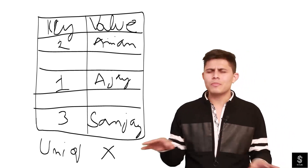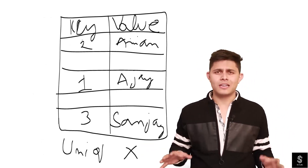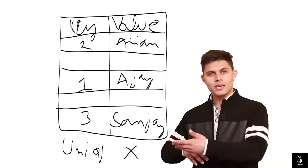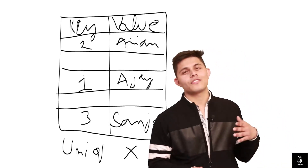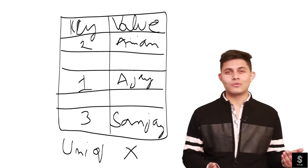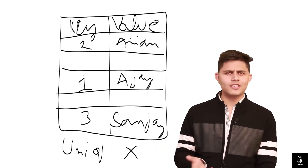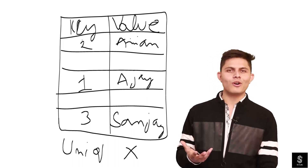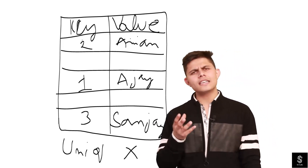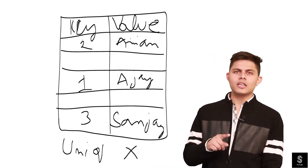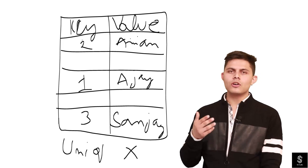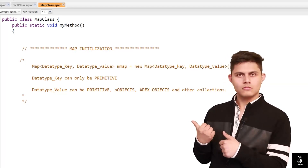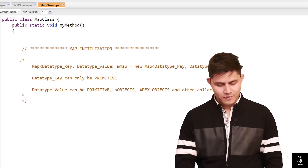This is how Maps work in every programming language, but in Apex you have to declare and use it in a different way, and there are different methods as well. So without wasting any further time, let's jump into the developer console and understand the syntax we use to create and use a Map.